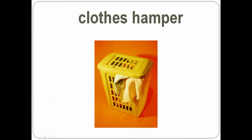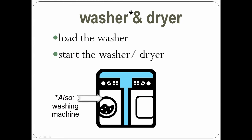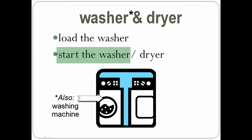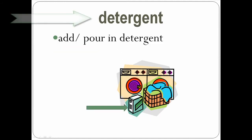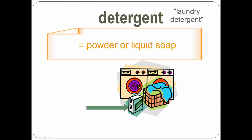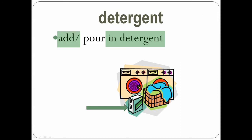Clothes hamper, or simply hamper — this is where we put our dirty clothes. The laundry basket. Washer and dryer. Load the washer. Start the washer. Start the dryer. Detergent is like soap — it can be either a powder or a liquid. We add in detergent, or we pour in detergent.